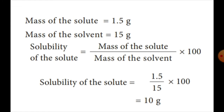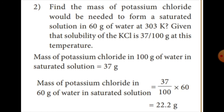Problem 2: 3.5 grams of solute dissolved in 60 grams of water at 303 K. The solubility of potassium chloride is 37 per 100 grams at this temperature. The mass of potassium chloride in 100 grams of water in saturated solution is 37 grams. Find the mass of potassium chloride in 60 grams of water.